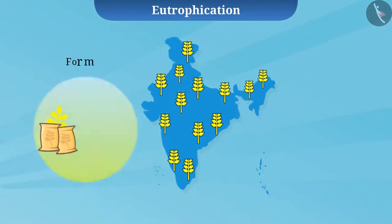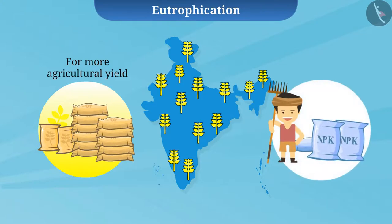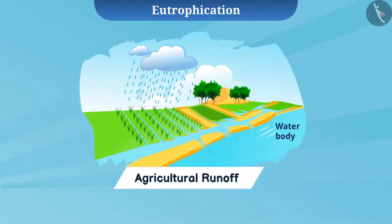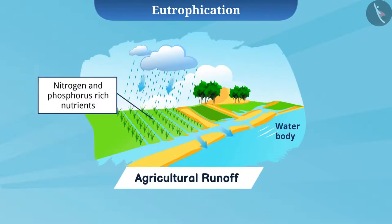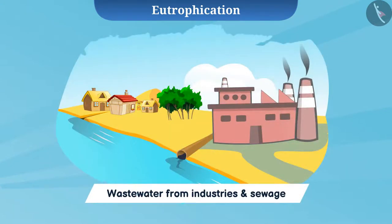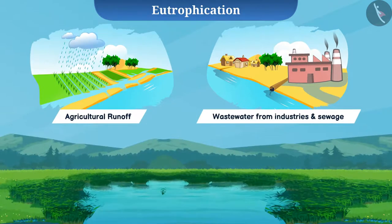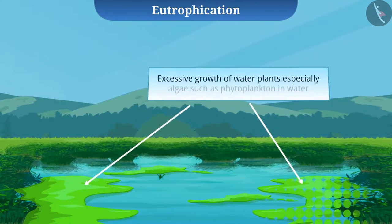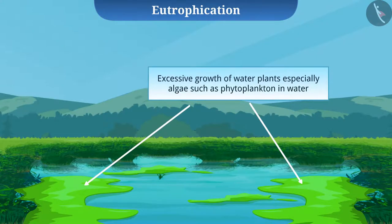In the race of obtaining more agricultural yield, we use fertilizers in excessive quantities. Often, runoffs from agricultural lands transfer nutrients rich in nitrogen and phosphorus to water bodies. Another way nutrients enter water bodies is through wastewater from industries and sewage. Due to this, the concentration of nutrients increases in the water, leading to excessive growth of water plants — especially algae such as phytoplankton. The rapid growth of algae in water is called a bloom.